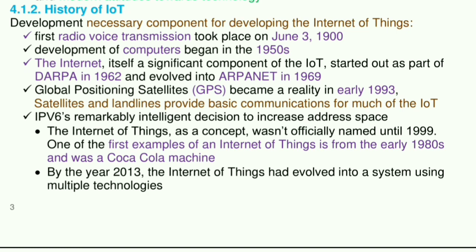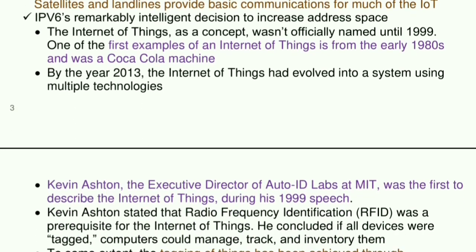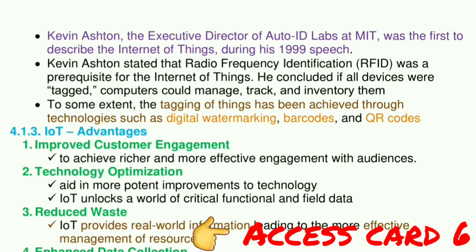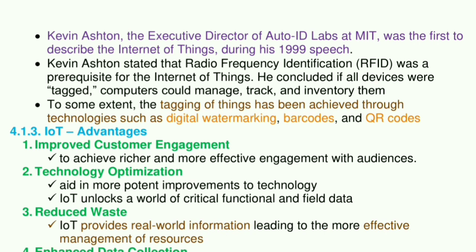One of the first examples of an Internet of Things is from the early 1980s and was a Coca-Cola machine. By the year 2013, the Internet of Things had evolved into a system using multiple technologies. Kevin Ashton, the executive director of Auto-ID Labs at MIT, was the first to describe the Internet of Things during his 1999 speech. He stated that radio frequency identification, RFID, was a prerequisite for the Internet of Things, concluding that if all devices were tagged, computers could manage, track, and inventory them. To some extent, the tagging of things has been achieved through technologies such as digital watermarking, barcodes, and QR codes.